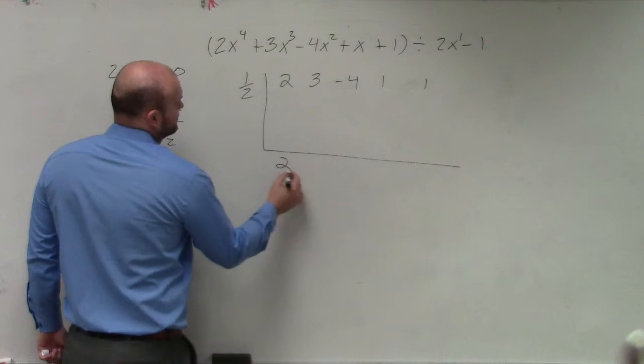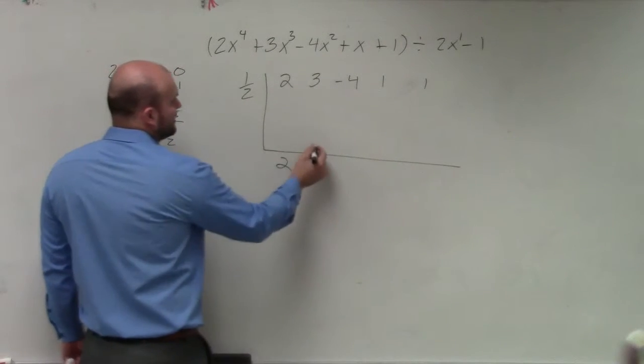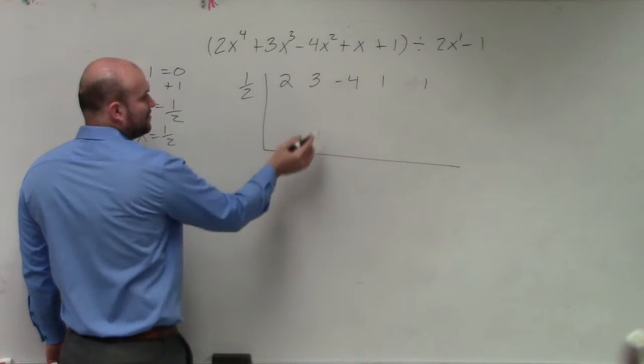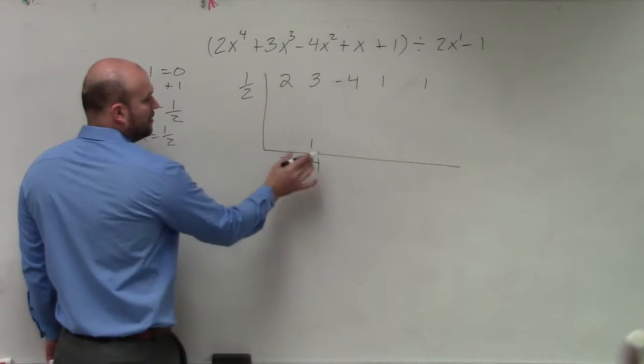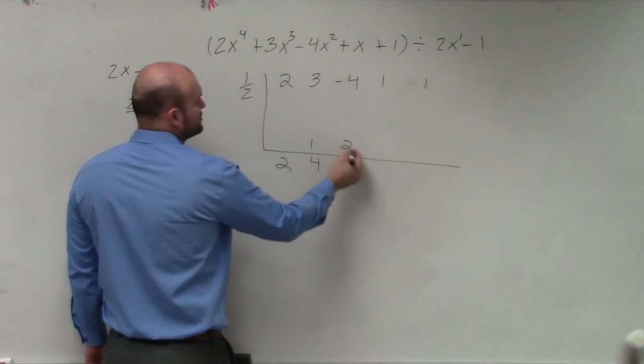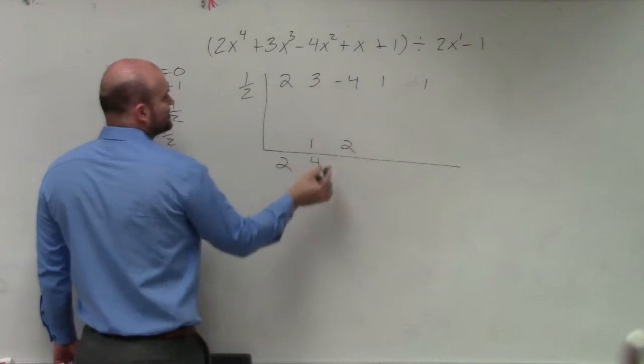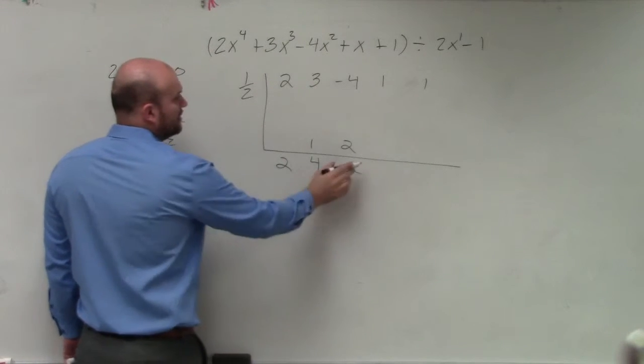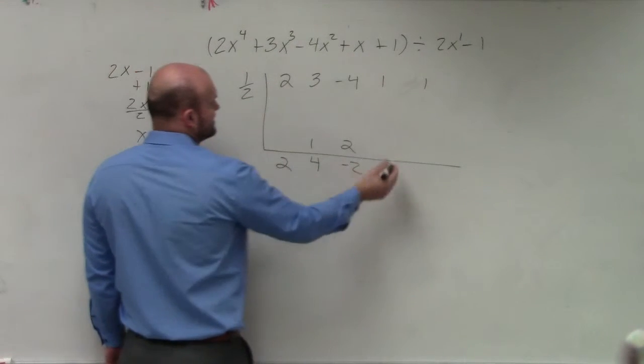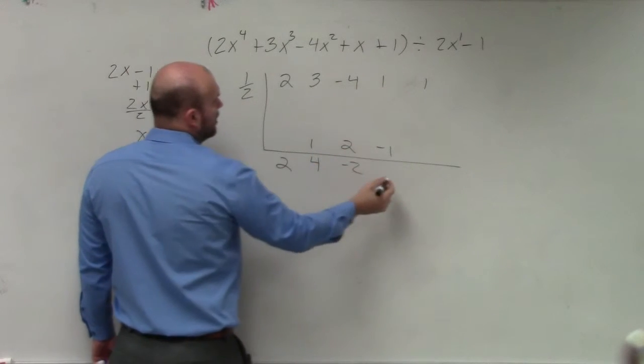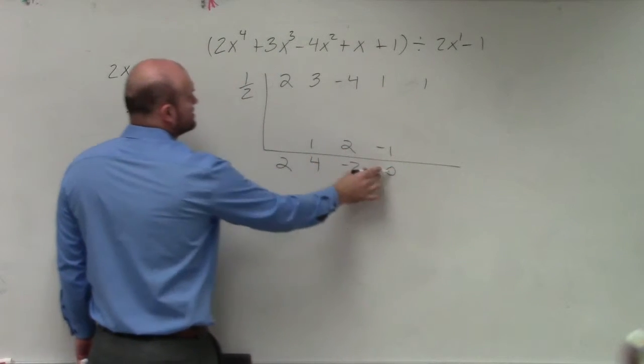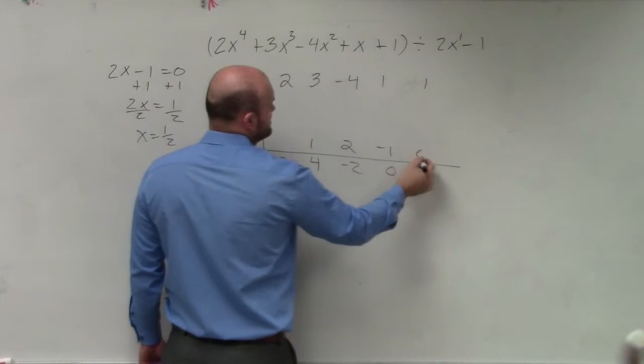First number, as you bring down, is 2. 2 times 1 half is 1. 3 plus 1 is 4. 4 times 1 half is 2. Negative 4 plus 2 is negative 2. Negative 2 times 1 half is negative 1. 1 plus negative 1 is 0. 0 times 1 half is 0.